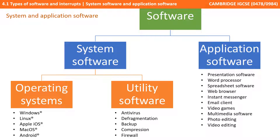Briefly, just as an overview, operating systems are things such as Windows, Linux, iOS or Android. Utility software includes things like antivirus programs, defragmentation, programs that do backup, compression and firewalls.